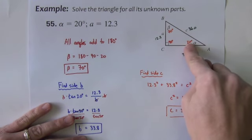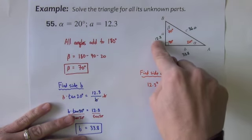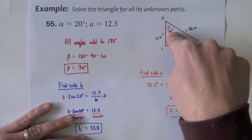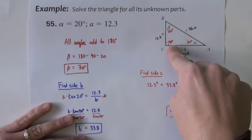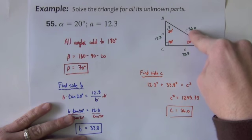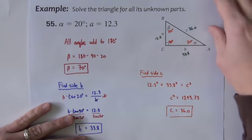Across from the smallest angle should be the shortest side. Next largest angle is the next longest side. And the largest angle is the longest side. So that all kind of matches up the way it should.